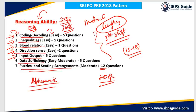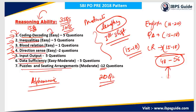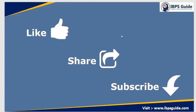To summarize the sectional cut-offs: in logical reasoning, attempt 15 to 18 questions; in English, attempt 18 to 20 questions; and in quant, attempt 15 to 18 questions again. If you add all three sections together, your total safe attempt should be between 48 and 56 questions, and if you answer all correctly you are on the safer side. All the best for your exam on 8th July. If you liked this video, please like, share, and subscribe to IBPSguide, and check out the description for their quality mock tests. Thank you.